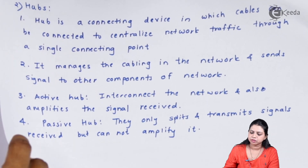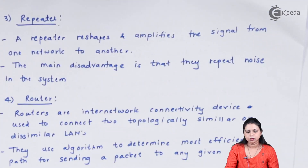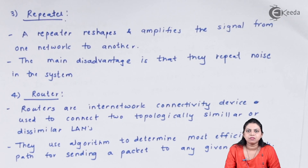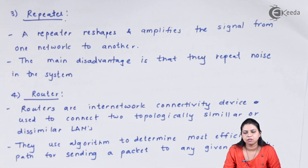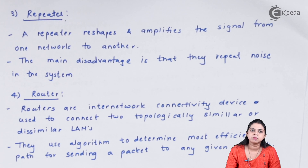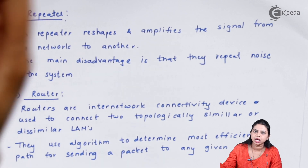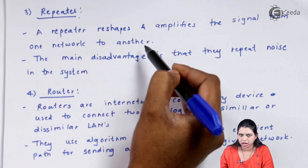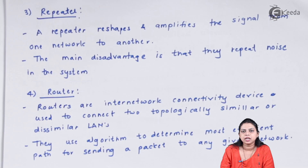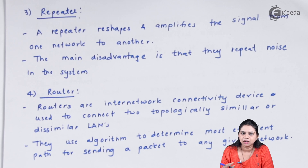The next connectivity device is called a repeater. The basic use of a repeater is to regenerate the signal. Whenever a signal passes along the wire, some part of the signal gets absorbed in the atmosphere. So we place a repeater in between — it regenerates, reshapes, and amplifies the signal, then passes it in the appropriate direction. The main disadvantage of a repeater is that it also regenerates noise or errors present in the network.